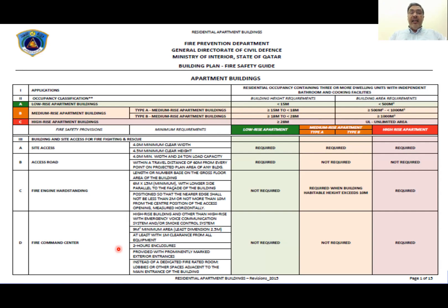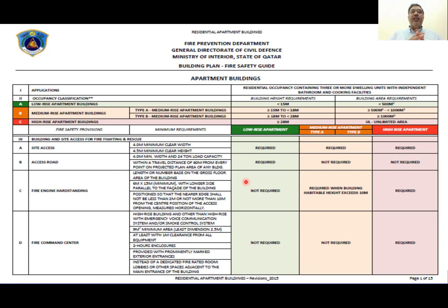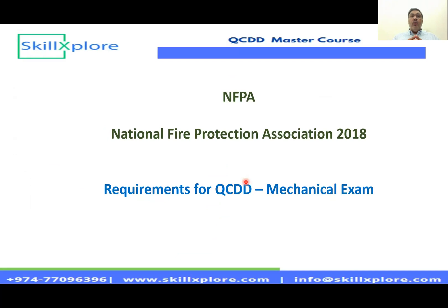We will take a complete session to explain in detail how to read the civil defense documentation — the types of buildings, the requirements for each discipline, the minimum requirements per civil defense and NFPA standards, and how to apply them for low-rise, medium-rise, and high-rise buildings. We will cover how to apply this for submissions, as-built drawings, during inspections, and when answering exam questions.